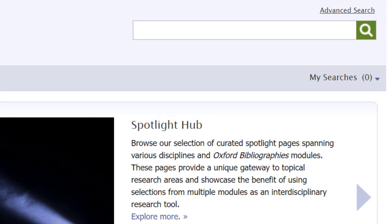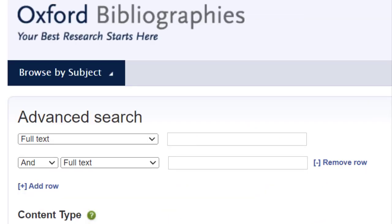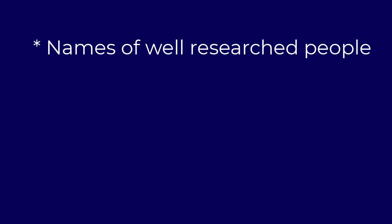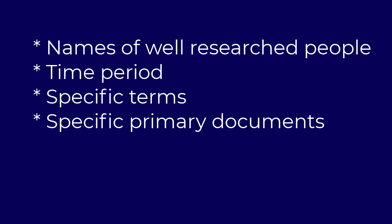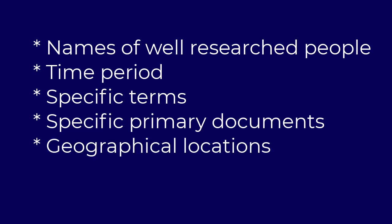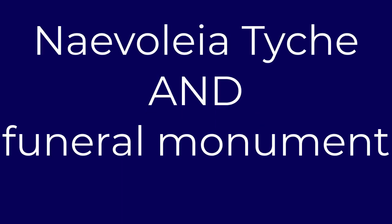When searching in Oxford Bibliographies, we recommend the advanced search option rather than the simple search — the simple search is not as efficient. When carrying out your research, be aware of names of well-researched individuals, time period, specific terms, specific primary documents, and geographical locations. Until you are familiar with the platform, we recommend using only a few keywords, such as 'tomb' instead of 'naivolia,' 'tike,' and 'funeral monument.'